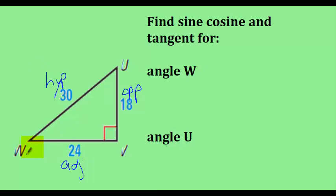Therefore, the sine of W is 18 over 30, the cosine of W is 24 over 30, and the tangent of W is 18 over 24 — all of which simplify.